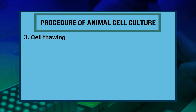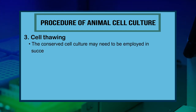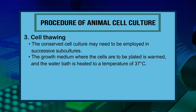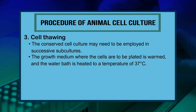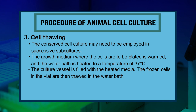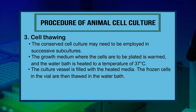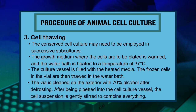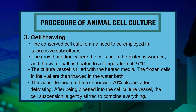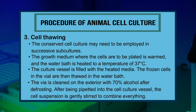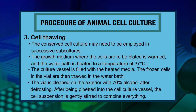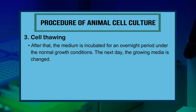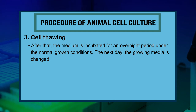For cell thawing, the growth medium is warmed in a water bath heated to 27°C and the culture vessel is filled with heated media. The frozen cells in the vial are thawed in the water bath. The vial exterior is cleaned with 70% alcohol after defrosting. The cell suspension is pipetted into cell culture vessels and gently stirred. The medium is then incubated overnight under normal growth conditions, and the growing media is changed the next day.